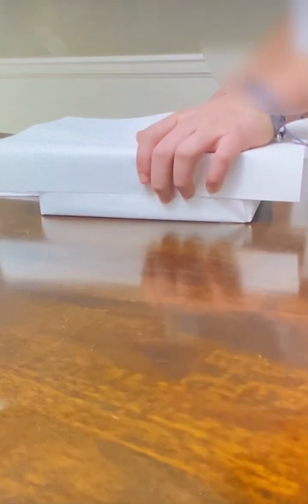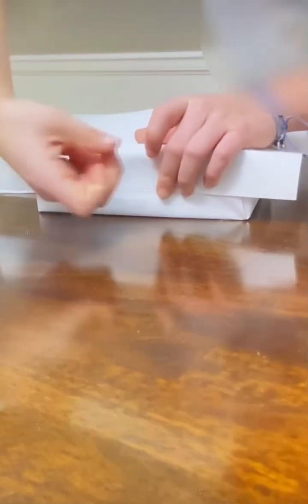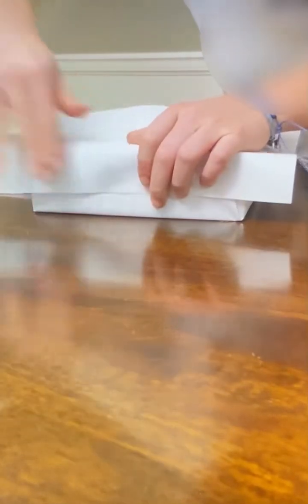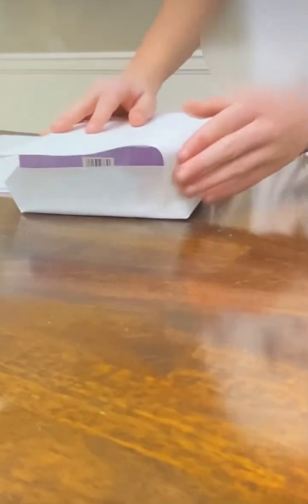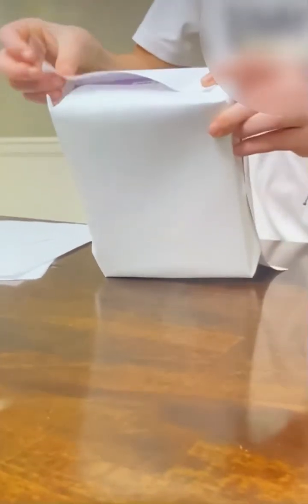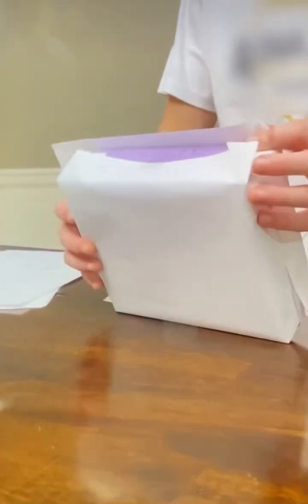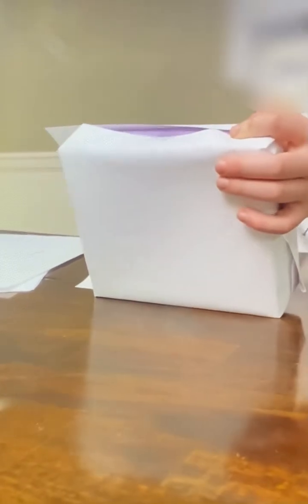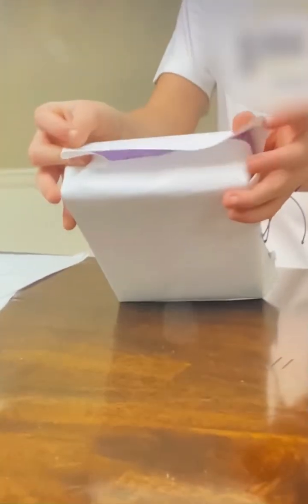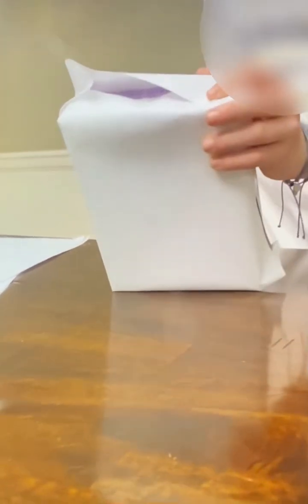First, put that side down, and then you put this piece of tape, and then you fold this edge, and then you put a piece of tape in the middle, and then you fold this edge. And then you put a piece of tape in the middle, and then on the top, you just fold it, and then put a piece of tape.